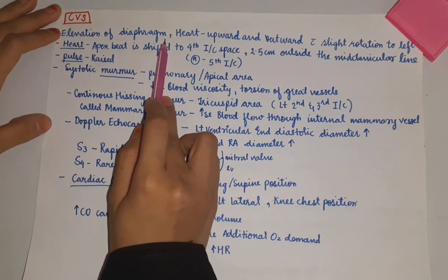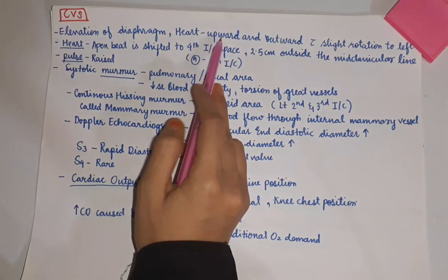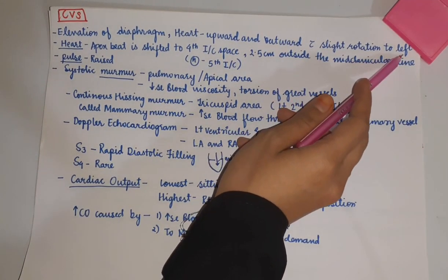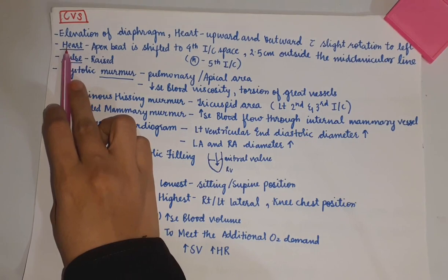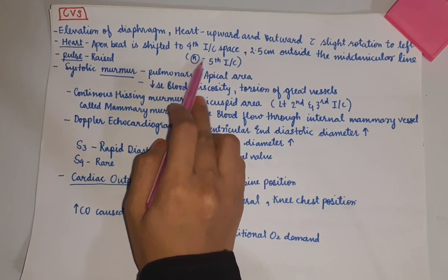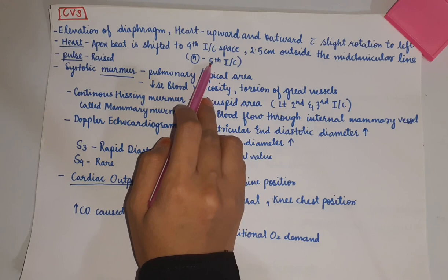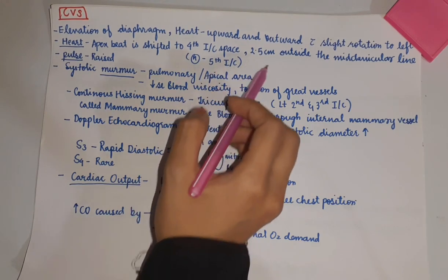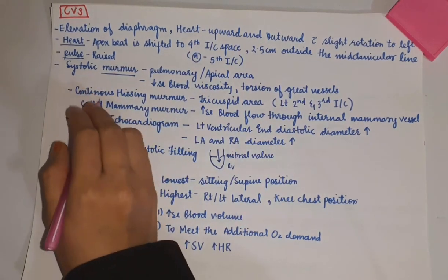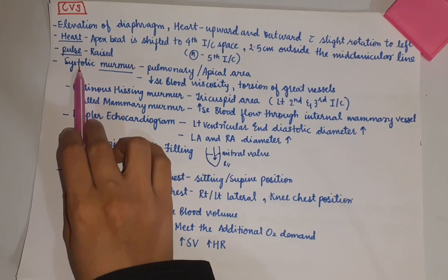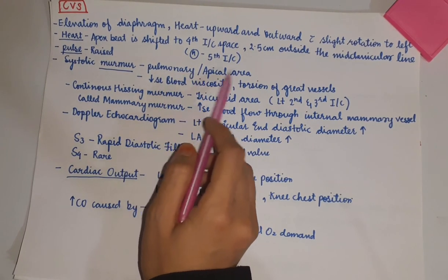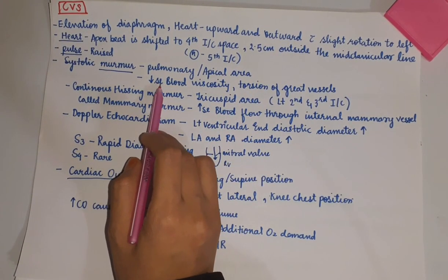There occurs elevation of the diaphragm. The heart is shifted upward and outward with slight rotation to the left. The apex beat is shifted to the fourth intercostal space — normally it is present at the fifth intercostal space — and 2.5 centimeters outside the mid-clavicular line. The pulse is also raised.